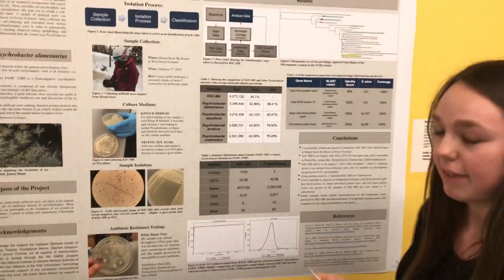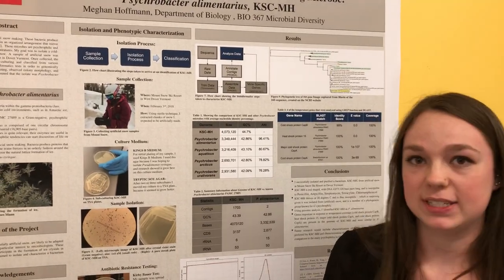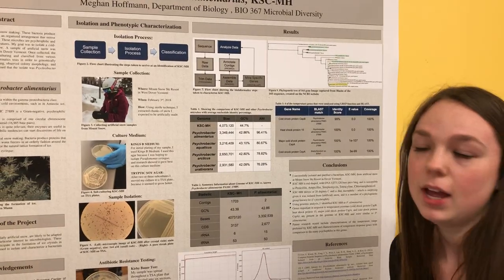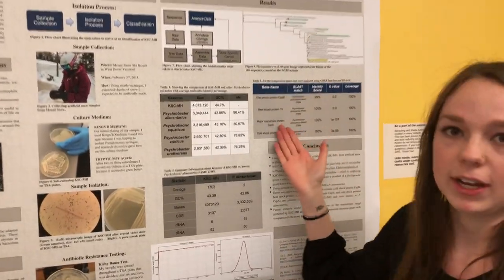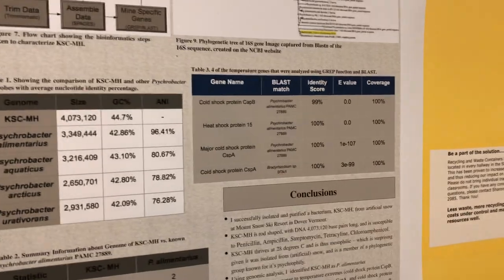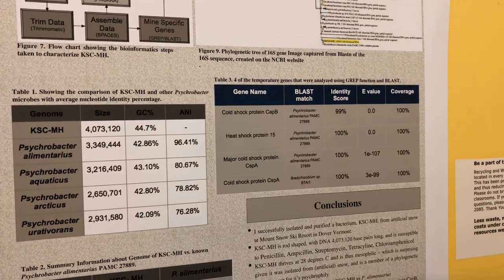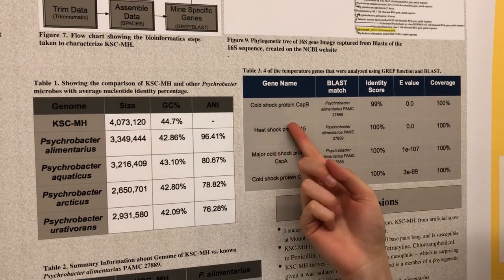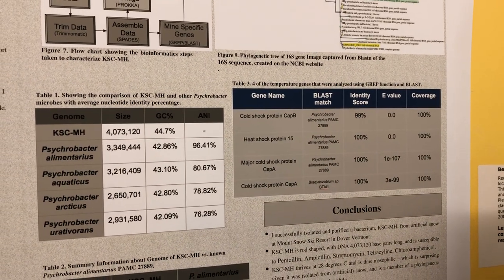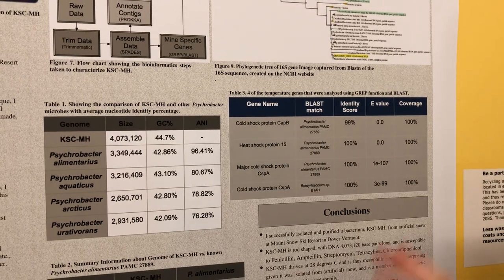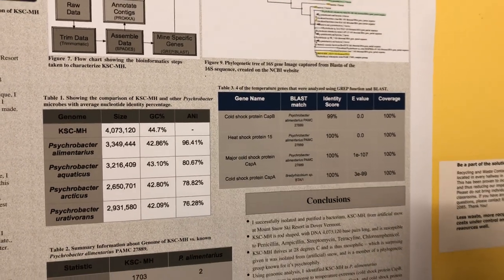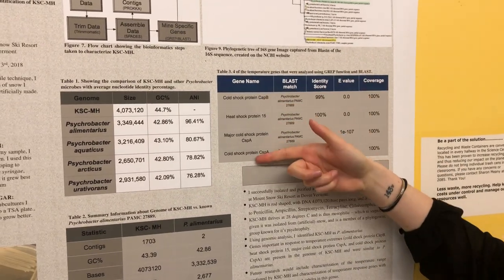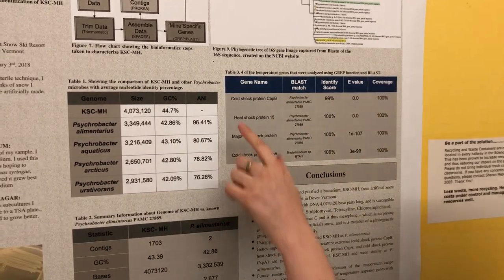After identifying my bacterium, I wanted to mine out specific genes of interest. Since Psychrobacter means cold-loving, I searched for genes related to temperature tolerance. I found these are called cold shock proteins, or CSPs, which help the cell function and survive in temperatures below their optimum growth. Using the server, I found a couple of different cold shock proteins as well as a heat shock protein.